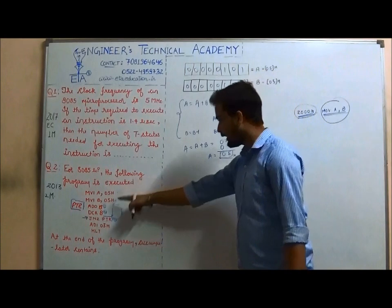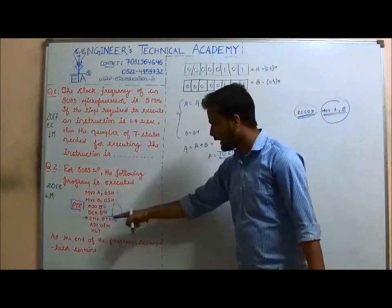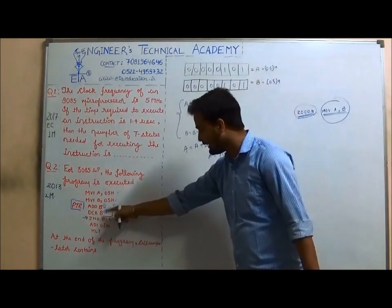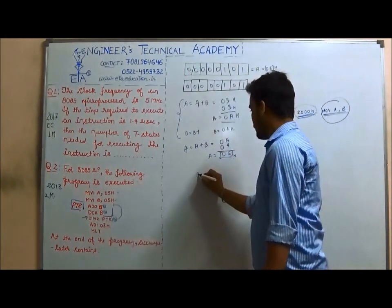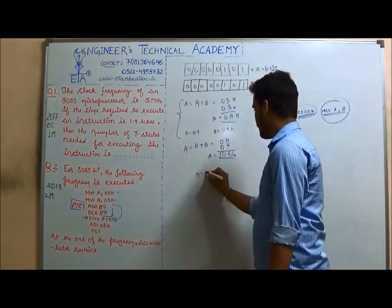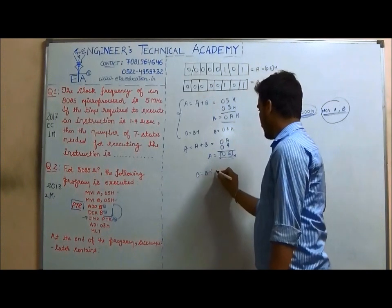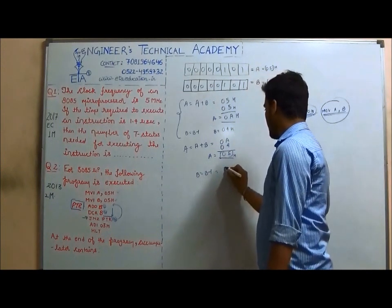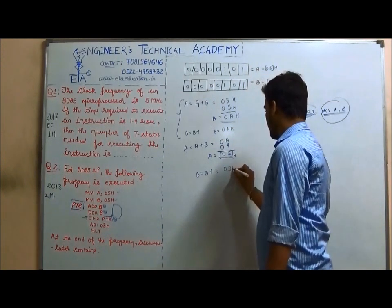The new value of A will be 0EH. Then we decrease B again — B becomes 03H.